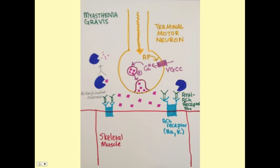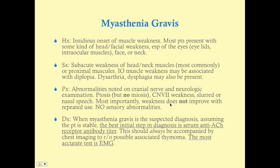In MG, anti-acetylcholine receptor antibodies block acetylcholine from acting at the receptor, preventing skeletal muscle contraction. The history is muscle weakness of insidious onset, developing over weeks — not sudden. Most patients present with head or facial weakness, particularly of the eyelids, face, or neck. MG is generally a symmetrical weakness, though eyelid weakness can sometimes be unilateral due to the small size of those muscles.